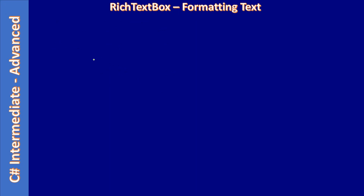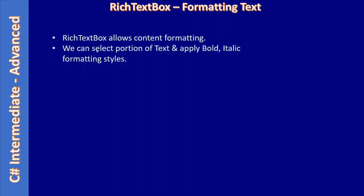In this video we are going to see how to format the text so that plain text becomes rich text. The RichTextBox allows content formatting — we can select a portion of text and then apply bold or italic formatting style. In this example we will look at bold, italic, and underline formatting styles, but there are multiple styles you can apply, including color, font, and other formatting options.